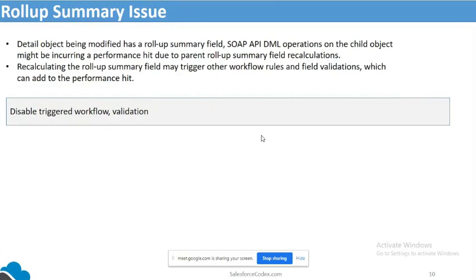The last issue is roll-up summary. In roll-up summary, based on child data we are showing a summary in the parent record. Whenever an update is made to child records, a recalculation is required. If a recalculation is required for a large data update, it will hamper your performance — a roll-up summary can take around 20 to 40 minutes to rescan the complete field and redo the roll-up summary. So this might create a problem during bulk data load.